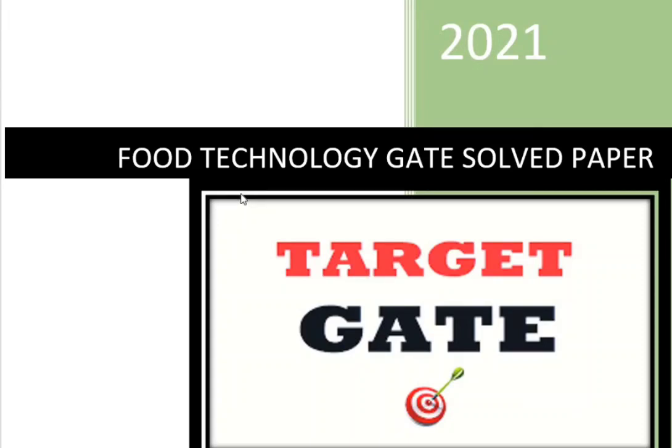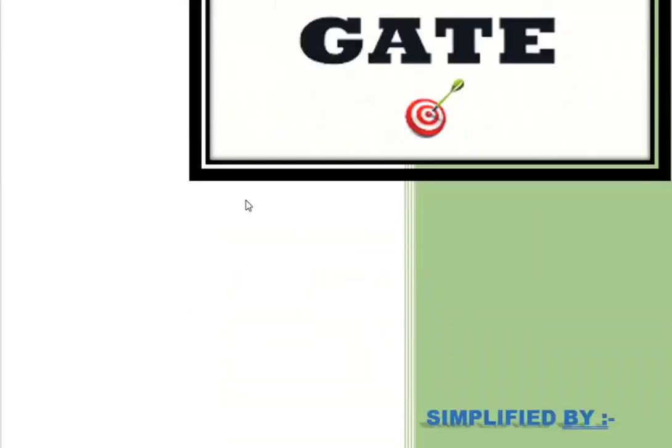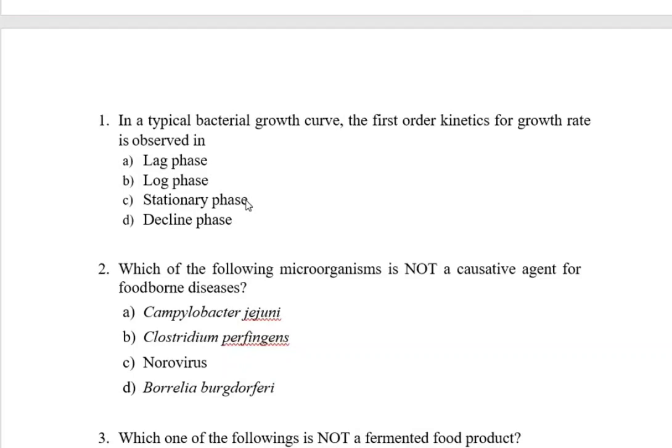In this video we are going to discuss food technology GATE questions 2021. So let's start question number one. In a typical bacterial growth curve, the first order kinetics for growth rate is observed in...